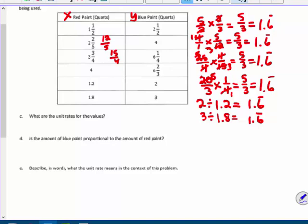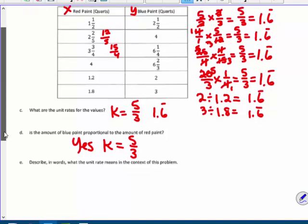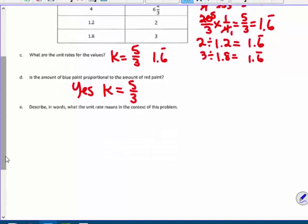So, what are the unit rates? They're all exactly the same. This is a proportional relationship. So, what are the unit rates? Well, K equals, well, we could say 5/3, or we could say 1 and 2/3 repetend. Is the amount of blue paint proportional to the amount of red? Yes, because K equals, there is a constant here, 5/3.